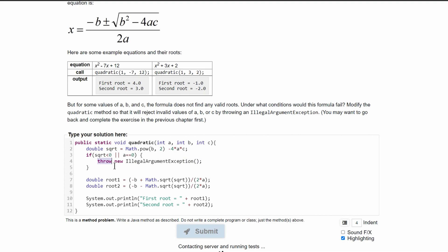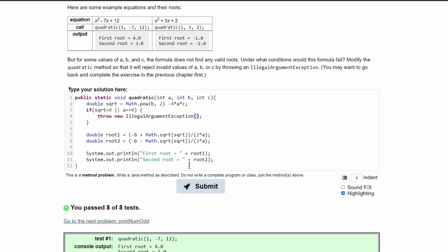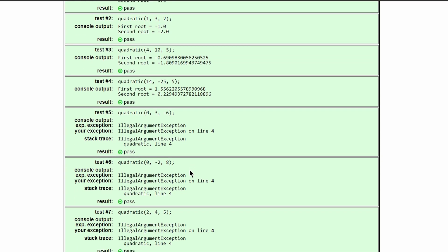Super important to remember that we have to throw a new illegal argument exception and have parentheses because it is a method. And we have passed all eight tests.